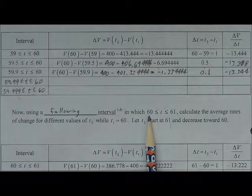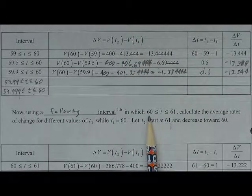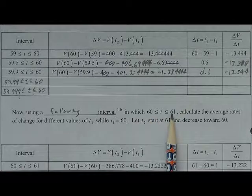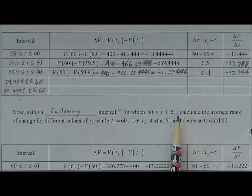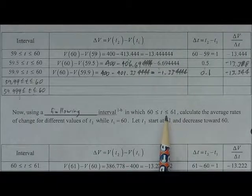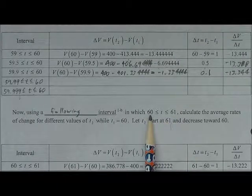Where T1 is going to stay at 60, and T2 is going to continually change, starting at 61, and slowly decreasing, getting smaller and smaller towards 60.